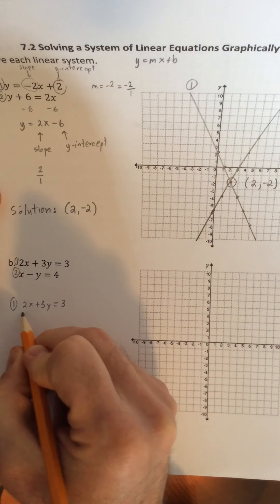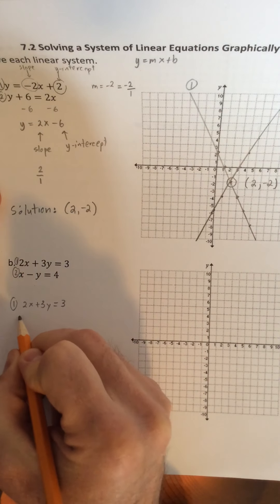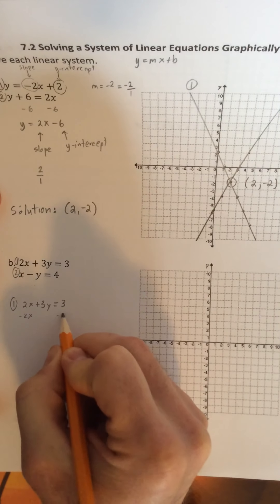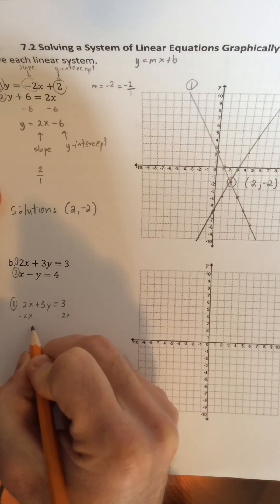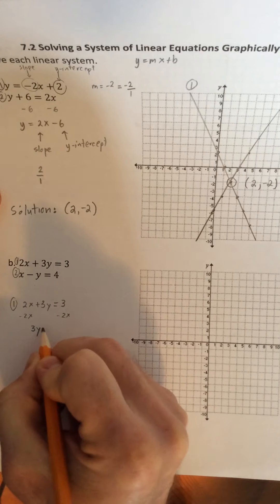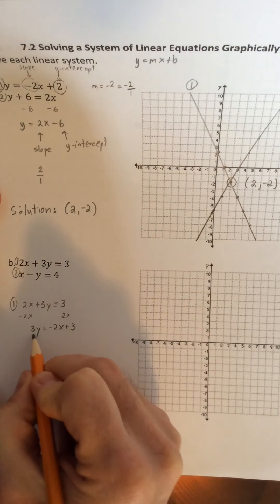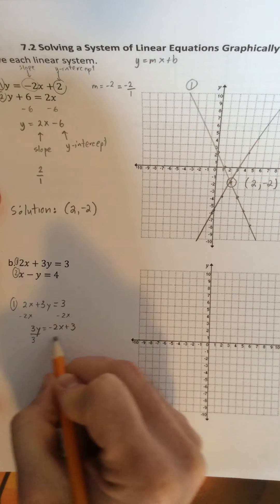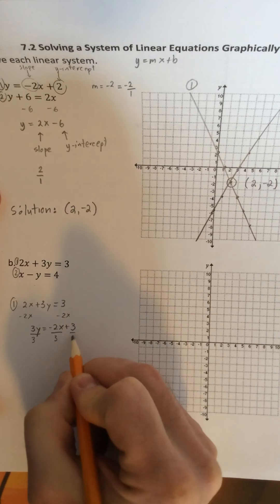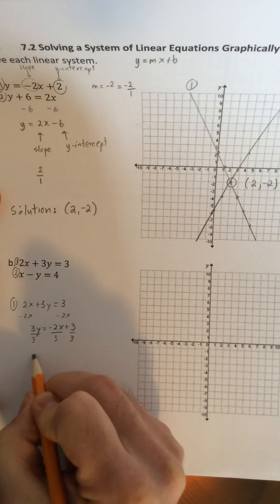Again, rearranging this so we're isolating y, we would need to subtract 2x from both sides of this equation. So you would be left with 3y is equal to negative 2x plus 3. And then if you divide by 3, since we're trying to isolate y, our equation would look like this.